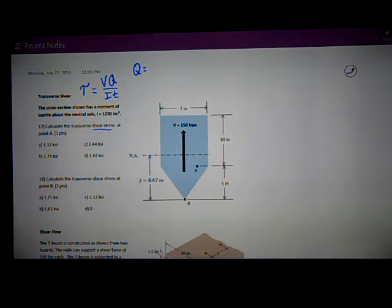Q is a geometric property. It's the first moment of area, defined as Y bar prime A prime, where Y bar prime is the perpendicular distance from the neutral axis.